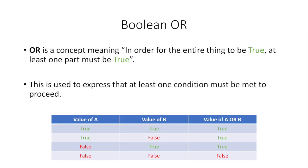OR is a concept meaning in order for the entire thing to be true, at least one part must be true. This is used to express that at least one condition must be met to proceed. I have my little table again with A and B. If both A and B are true, when we say A OR B, that's true because at least one of them is true. When we say A is true and B is false, A OR B is still true because A is true. If A is false and B is true, A OR B is still true because B is true. Now if A is false and B is also false, A OR B is false because neither of them is true.